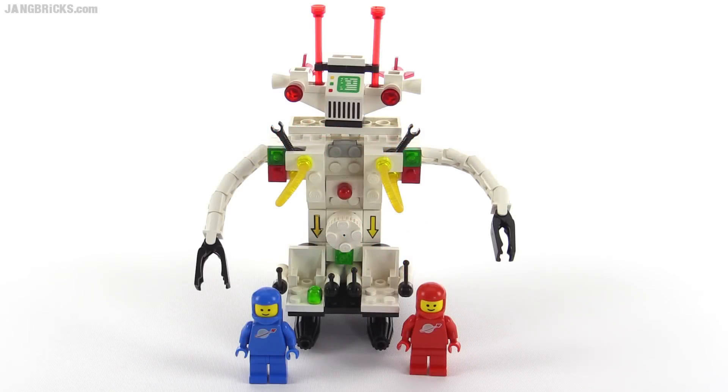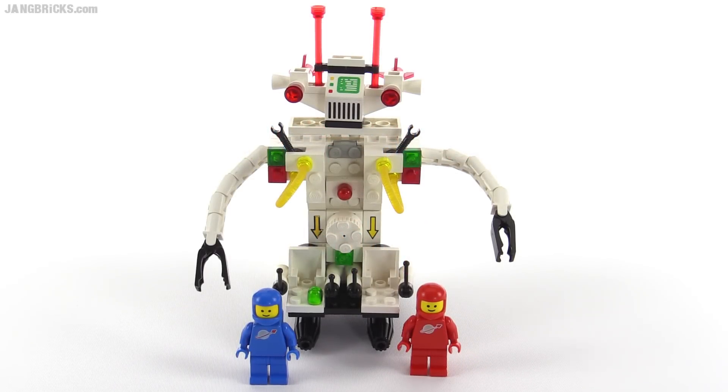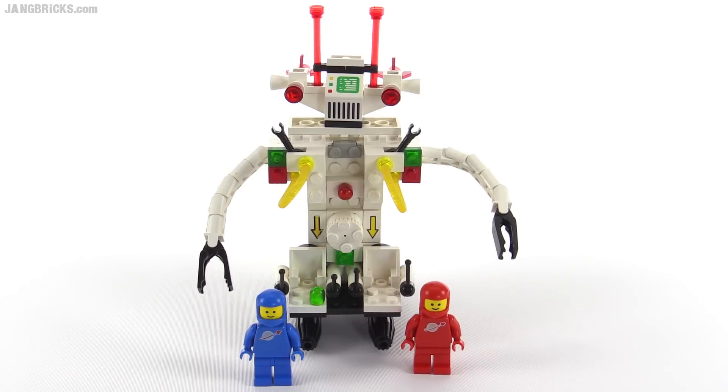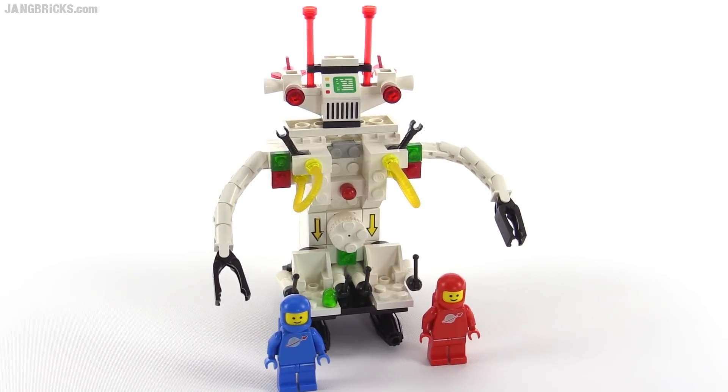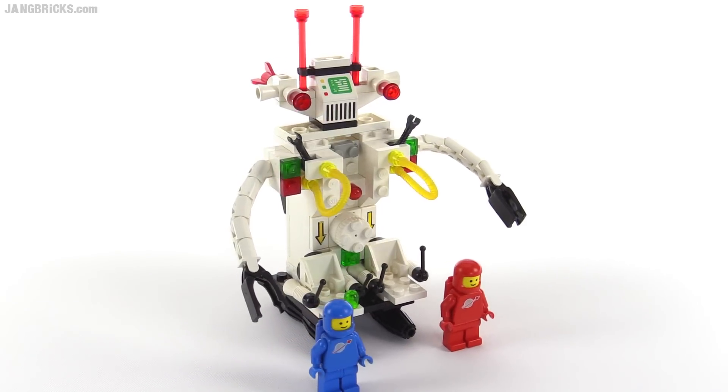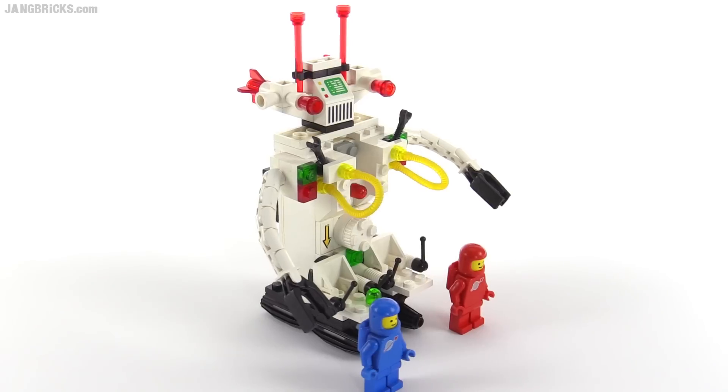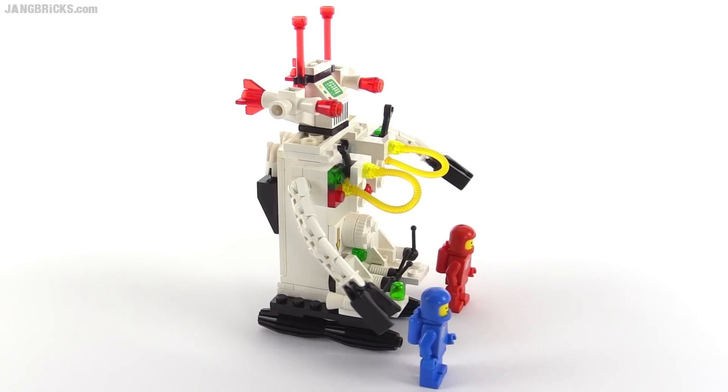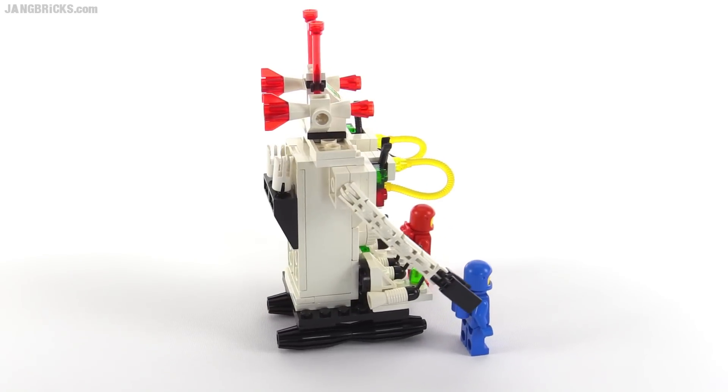Hello, it's Jang here with a look at a classic Lego space set from 1986. This was called Sonic Robot. Came with 103 pieces and this one does have the 9-volt lights and sounds system embedded into it. Comes with those two minifigs you see on the front.